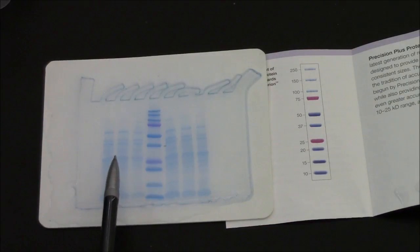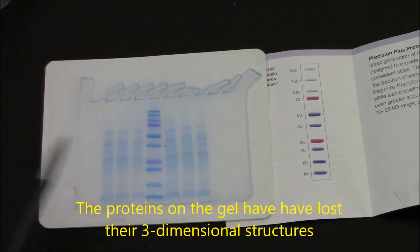We could cut the protein out of the gel and get a fairly pure sample of the beta-lactamase, but it would have no activity.